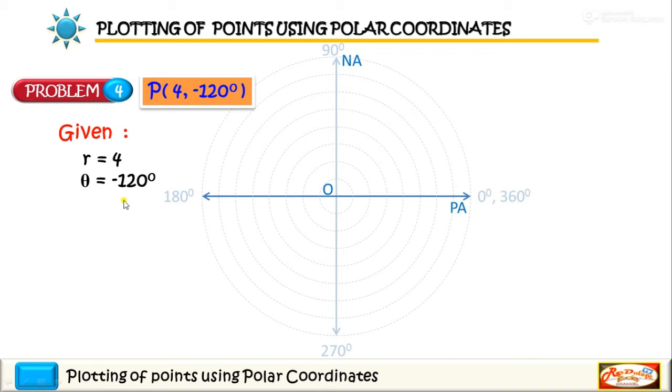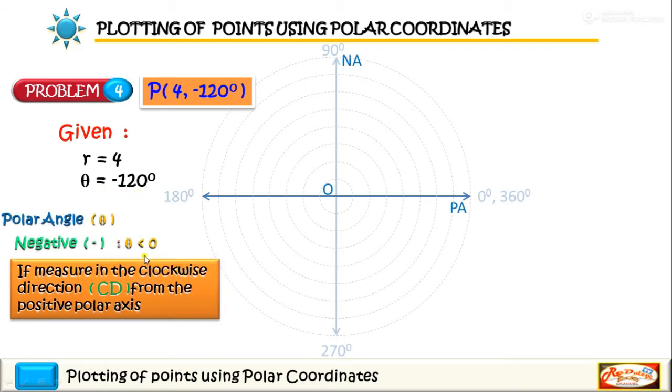Okay, since theta is equal to negative 120 and that is less than zero, we will measure the negative 120 in a clockwise direction from the positive polar axis. Okay, so this is it.